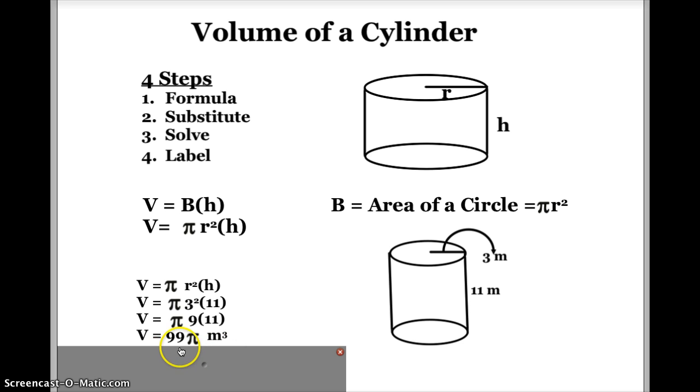Now, I could have multiplied 99 times pi, or an approximation of pi, like 3.14, and gotten an approximate answer of 310.86 meters cubed.